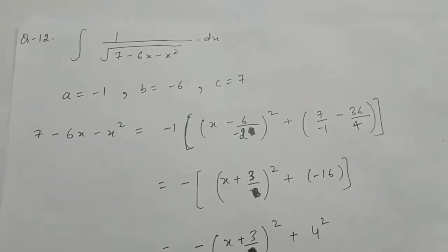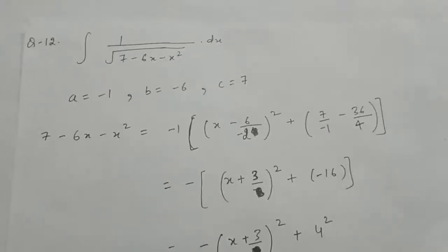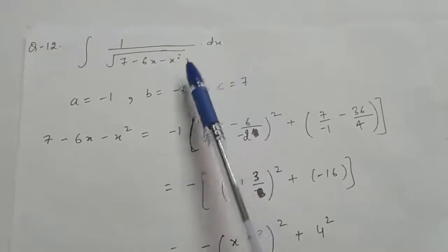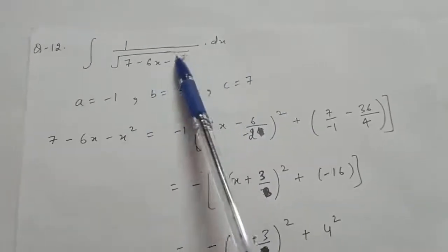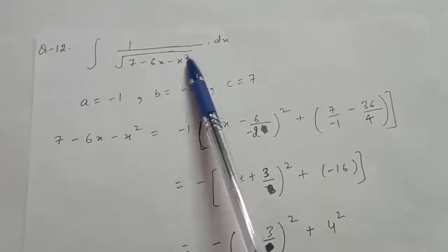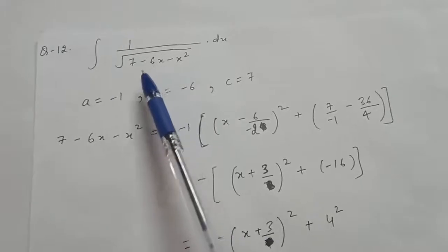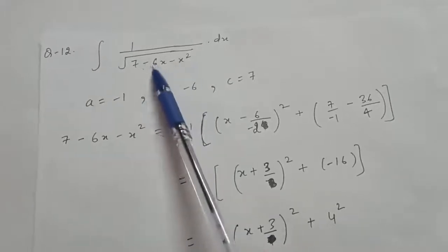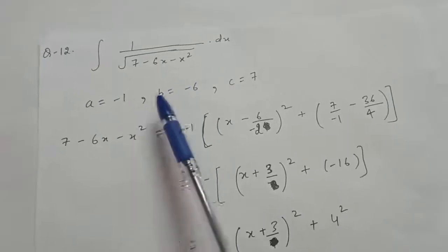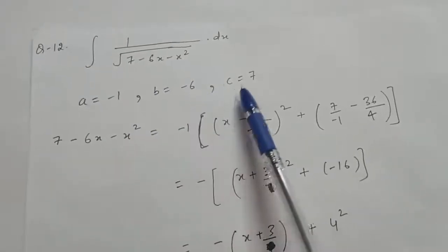Question 12th is the integral of 1 upon root (7 minus 6x minus x²) dx. This is a quadratic inside the root in the denominator. First we change this into standard form. Comparing with the standard quadratic equation: a equals minus 1, b equals minus 6, and c equals 7.